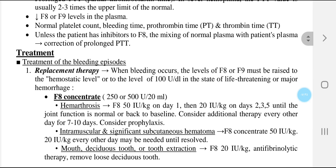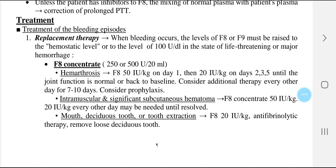Treatment of hemophilia — treatment of bleeding episodes. First, replacement therapy: when bleeding occurs, the level of factor 8 or factor 9 must be raised to the hemostatic level, or to 100% in life-threatening or major hemorrhage. Factor 8 concentrate is available containing 200, 250, or 500 units per 20 mL. In hemarthrosis, we give factor 8: 50 international units per kg on day one, then 20 international units per kg on days two, three, and five.